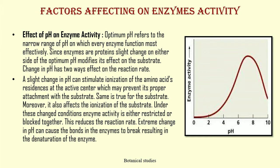Factors affecting enzyme activity — effect of pH on enzyme activity. Optimum pH refers to the narrow range of pH at which every enzyme functions most effectively. Since enzymes are proteins, a slight change on either side of the optimum pH modifies its effect on the substrate. A change in pH has a two-way effect on reaction rate: a slight change in pH can stimulate ionization of the amino acid residues at the active center, which may prevent proper attachment with the substrate, and it also affects the ionization of the substrate. Under these changed conditions, enzyme activity is either restricted or blocked, reducing the reaction rate. An extreme change in pH can cause the bonds in the enzyme to break, resulting in denaturation of the enzyme.